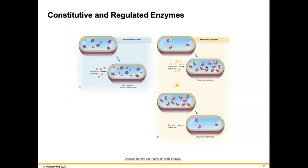So if there's an increase in substrate, then the enzymes will be induced to be made. If we have a whole bunch of enzymes and then suddenly all of our substrate goes away, then the enzyme will be repressed by the bacteria or the microorganism. Bacteria are specifically very clever with being able to start making things they've never made before as far as enzymes, and then suppressing them as needed.